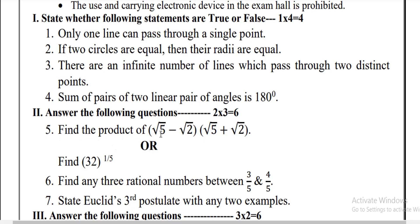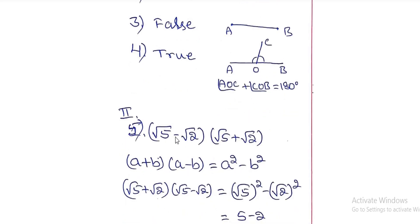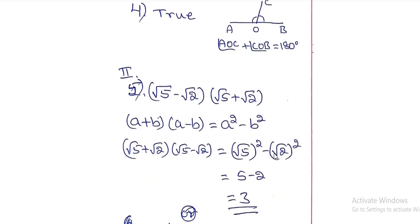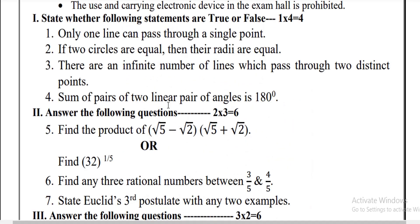Now we come to the second section: answer the following questions. Find the product of (√5 − √2)(√5 + √2). This is based on the formula (A + B)(A − B) = A² − B². Here A = √5 and B = √2. Substituting: (√5)² − (√2)² = 5 − 2 = 3. That is the answer.